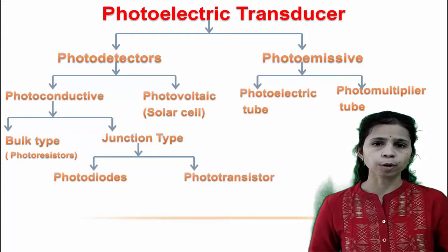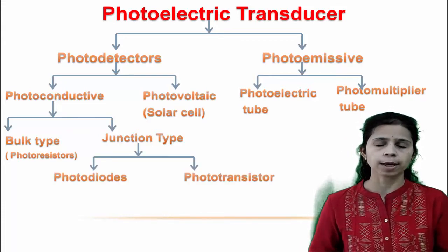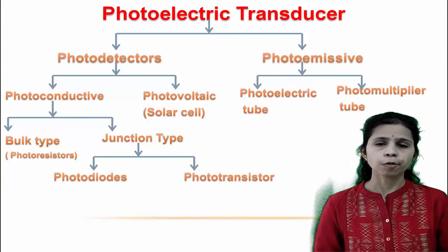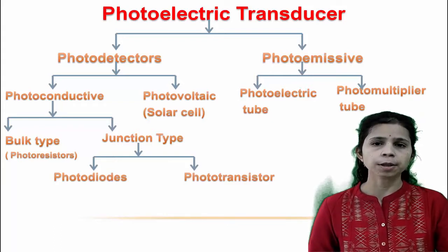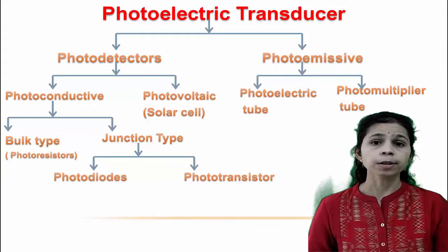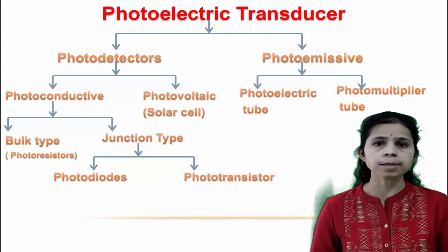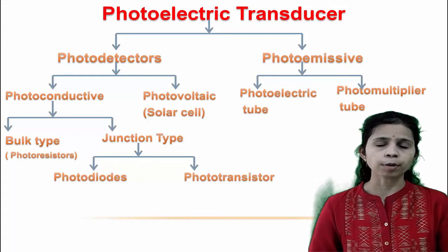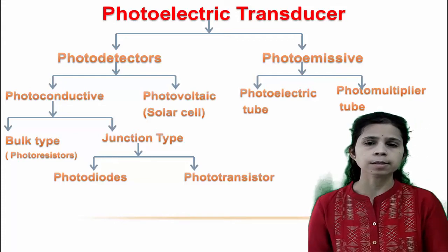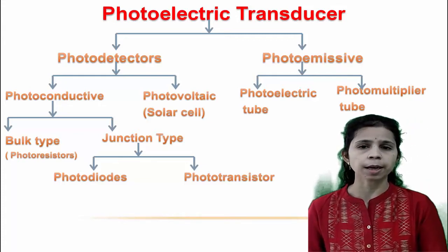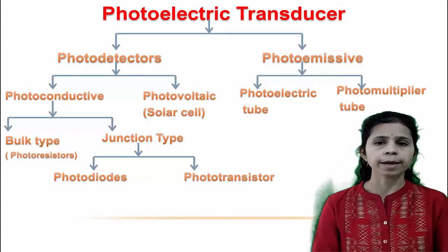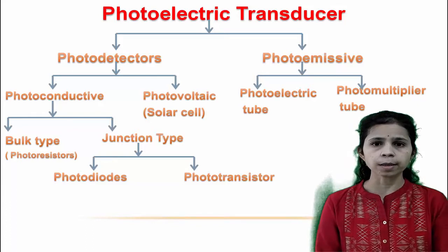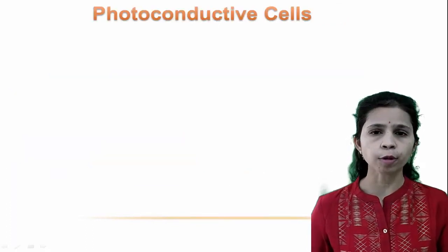Bulk type photoconductive devices generally consist of a single layer of photosensitive material with no PN junction. Junction type photoconductive devices can be either a photodiode — a PN junction diode with reverse bias — or a phototransistor, which detects light and converts it into electric voltage.